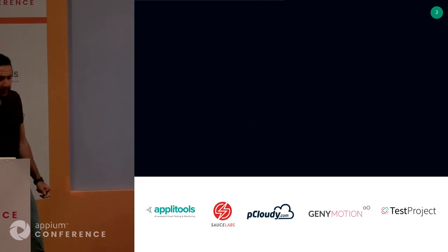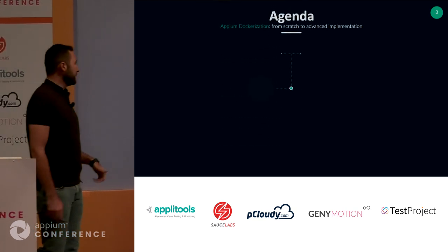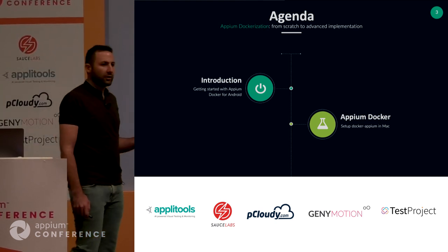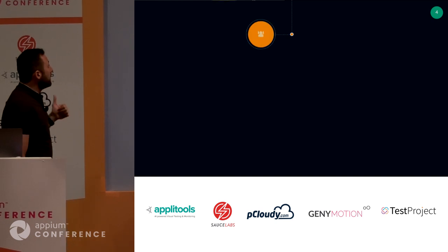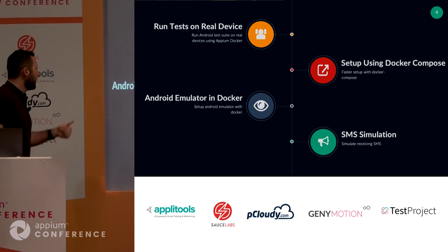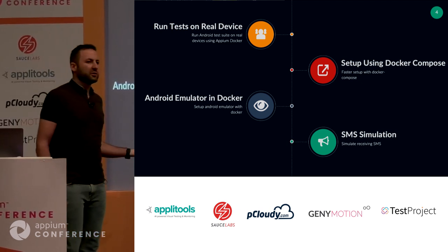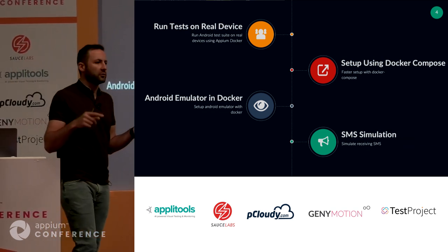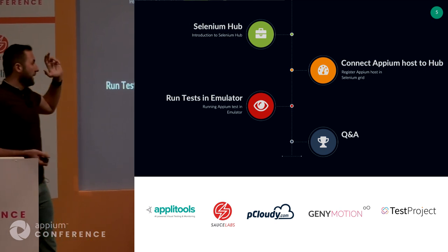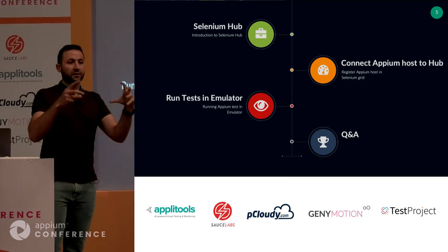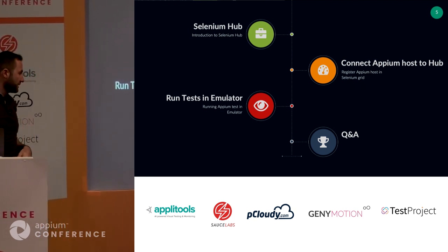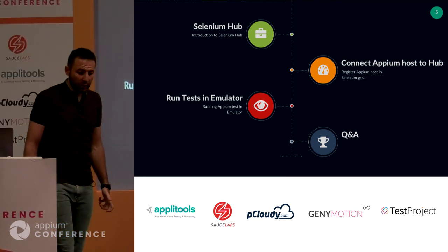Let's get started. The agenda: we'll talk about a brief introduction — why we need this, what is the purpose. We'll get familiar with Appium Docker, run tests on a real device using the Dockerized Appium server, and set it up with a Docker Compose file to make it easier. We'll use the Android emulator inside Docker, show some tricks like connecting via Wi-Fi or simulating SMS. Finally, we'll connect everything to the Selenium hub and run tests through the Dockerized Appium and emulator — everything fully Dockerized.